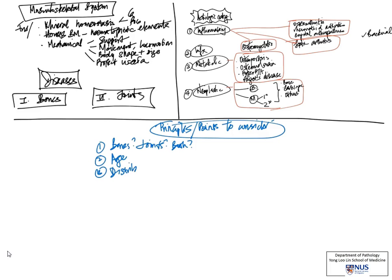Age and epidemiology are extremely important. Different inflammatory conditions affect patients of different ages, and certainly for neoplasms, children, young adults, and mature adults all have different types of tumors. This is very similar to what we see in the central nervous system.